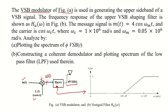On the right side we have the magnitude response of the vestigial sideband filter, which starts at 0.9 mega radians per second. Until 1.1 mega radians per second it has a linear slope, and after that we have a constant value of 1. The message signal m(t) is given as 4·cos(ω_m t).